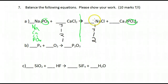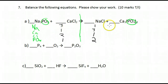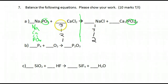Now that we've counted them, we can start to balance them. Remember, the only thing we can change is the coefficients — the number in front of the formula. We can never change the subscripts because that changes the chemical formula and what the chemical actually is. Let's start with the sodium: we have three on this side so let's put three over here.